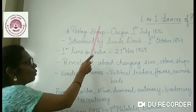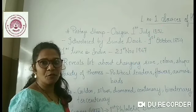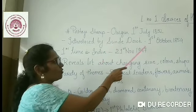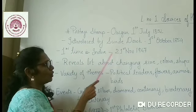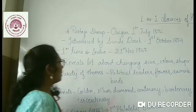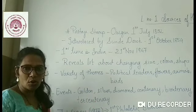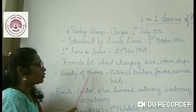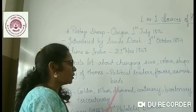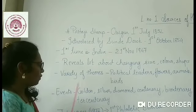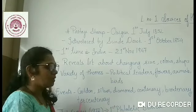Postage stamps originated on 1st July 1852. They were introduced by Hudson Job on 1st October 1854, and first came to India on 21st November 1947. They reveal a lot about changing size, color, and shapes. They have a variety of themes covering political leaders, flowers, animals, and birds. They also cover events of golden, silver, diamond, bicentenary, and tricentenary celebrations.